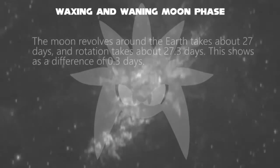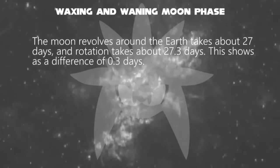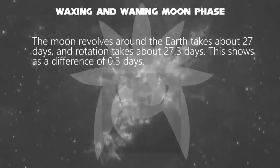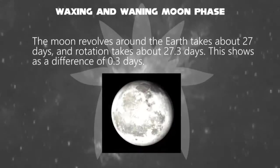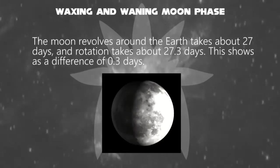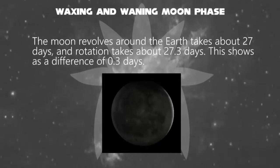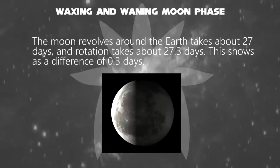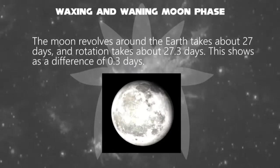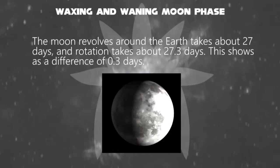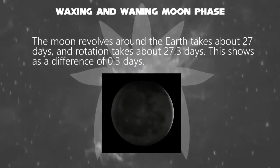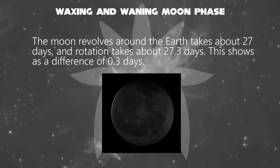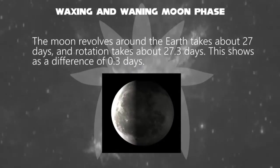The revolving period takes about 27 days, and the rotating period takes about 27.3 days. The difference is almost the same — just 0.3 days, the smallest duration.